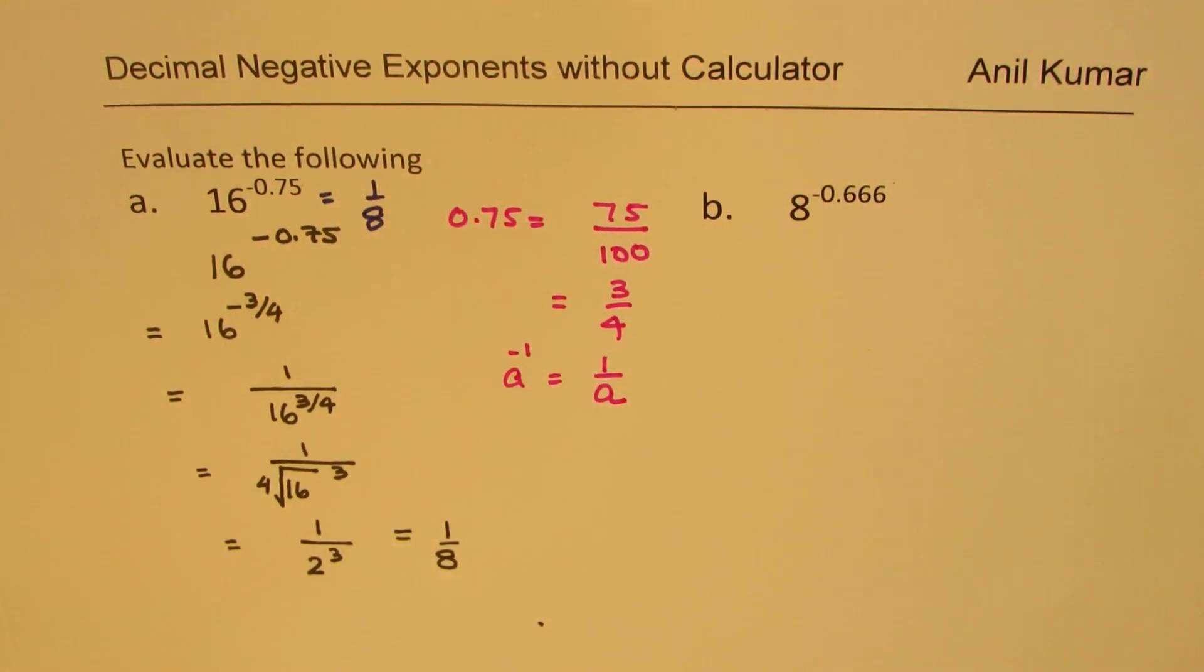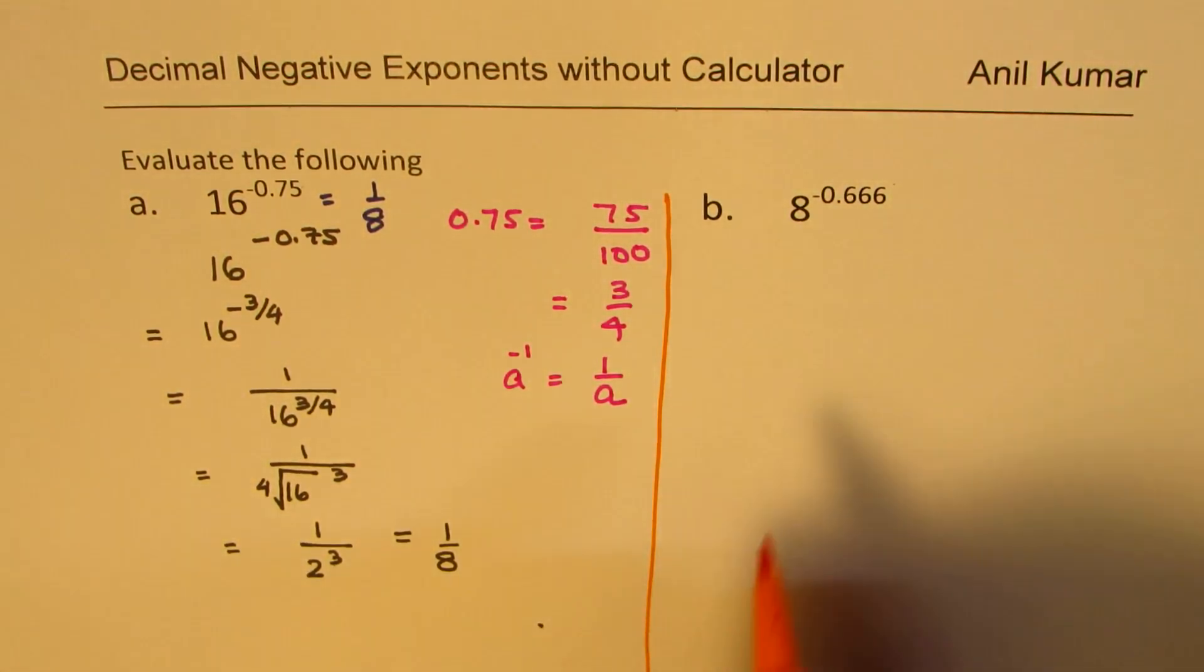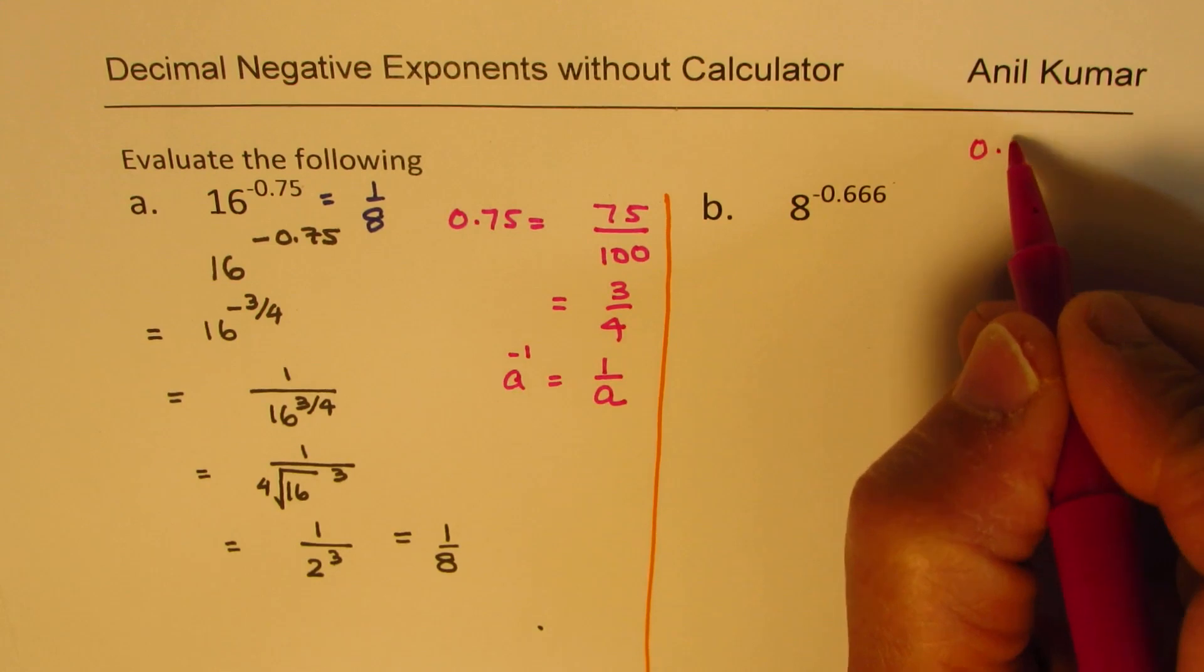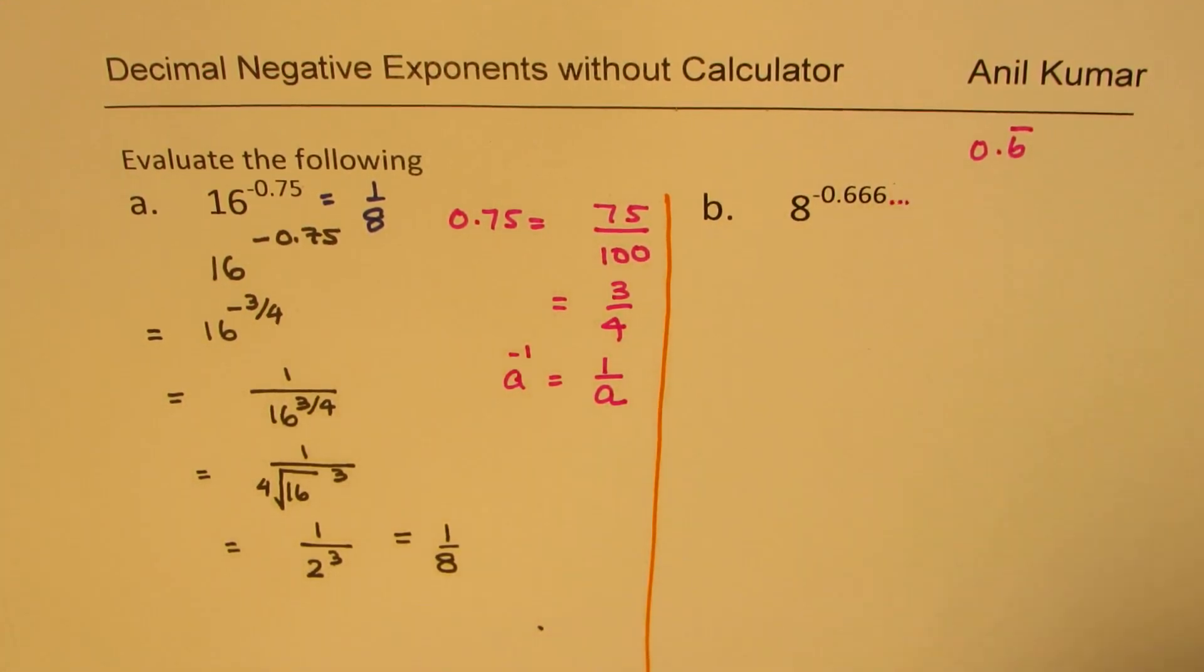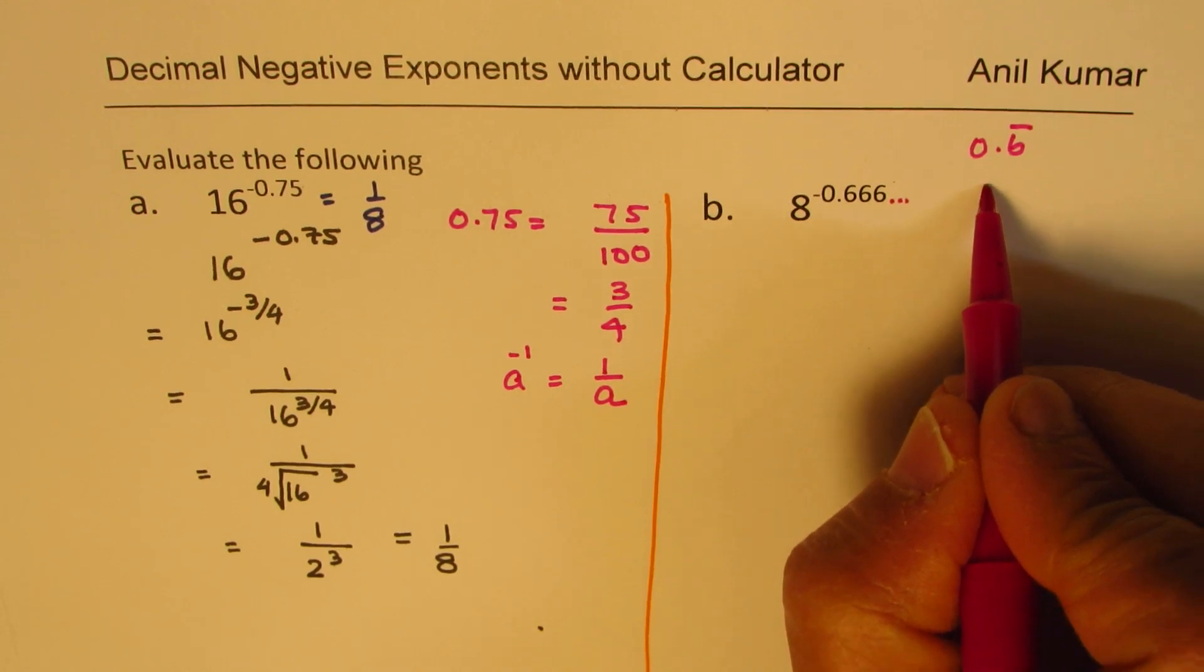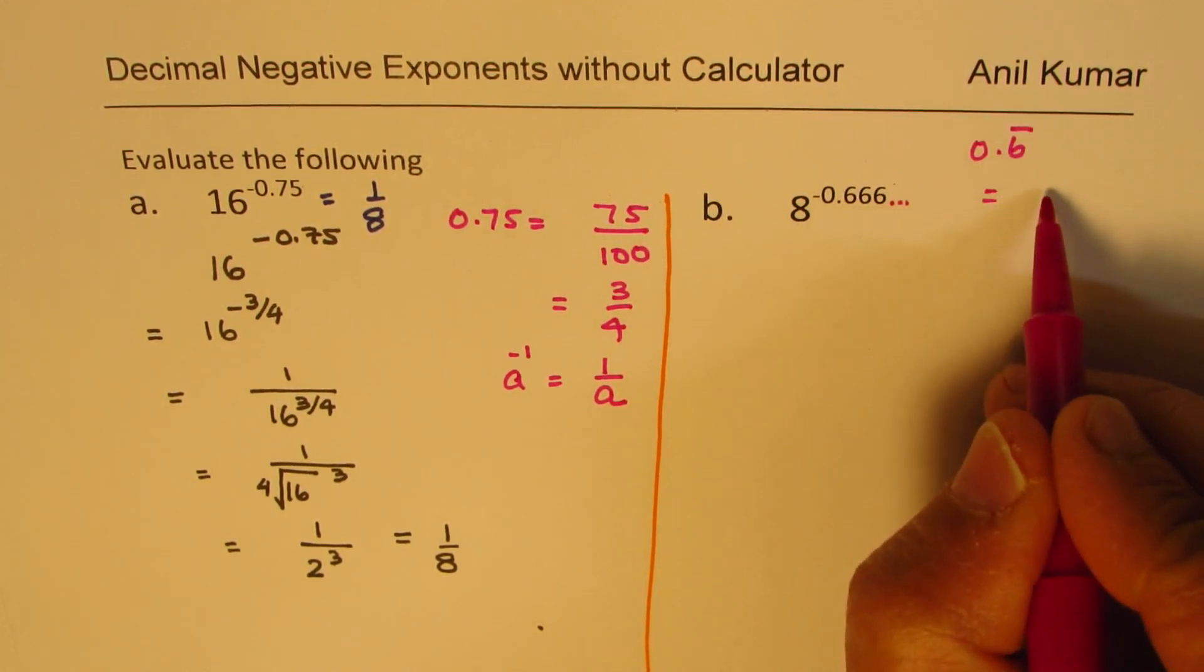We get this as equal to 1 over 8. So I hope the steps are absolutely clear. Now let's take up the second example in which we have a recurring number. What is 0.6 recurring equal to? When it repeats, think like this. We know 1 over 3 is 0.333 recurring. So 0.666 recurring is 2 over 3.